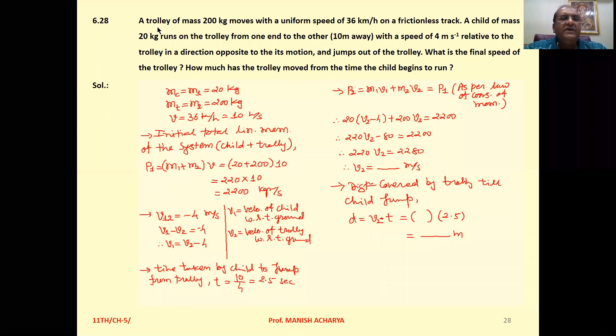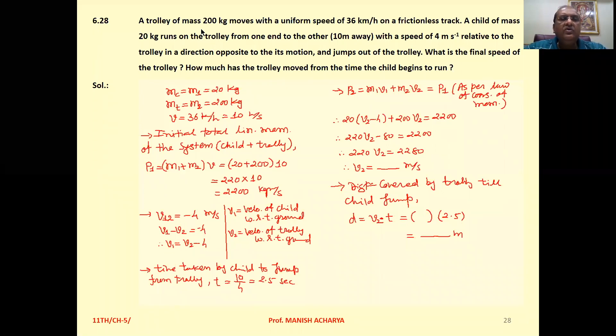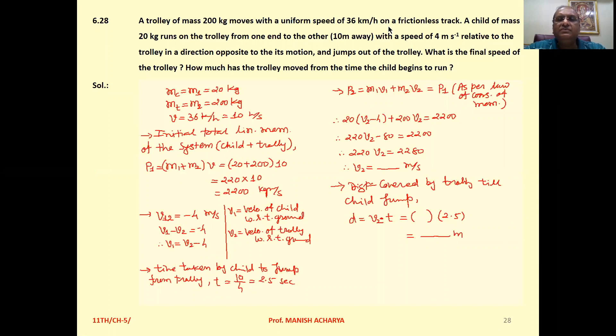Problem 6.28. A trolley of mass 200 kg moves with a uniform speed of 36 km per hour on a frictionless track.